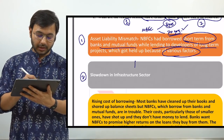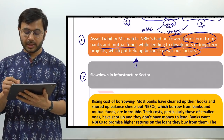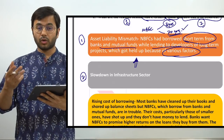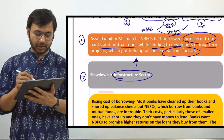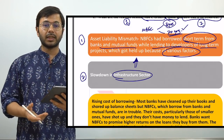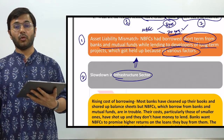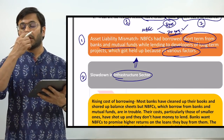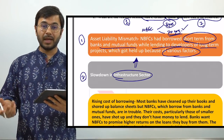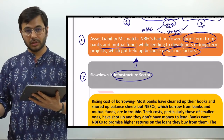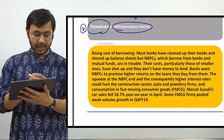The second reason is a slowdown in the infrastructure sector, which is strongly connected to the first point. The developers who borrowed for long-term projects were basically from the infrastructure sector — real estate, roads, airways, waterways. All those infrastructure sector companies had borrowed from NBFCs but are unable to pay back because of various slowdowns that are happening. The third reason is rising cost of borrowing.